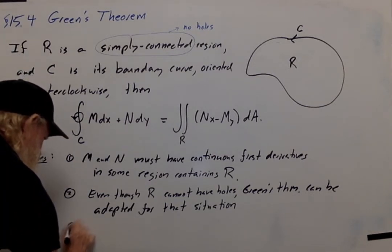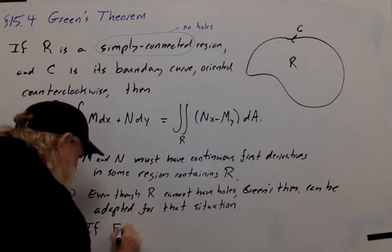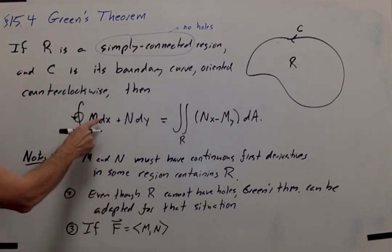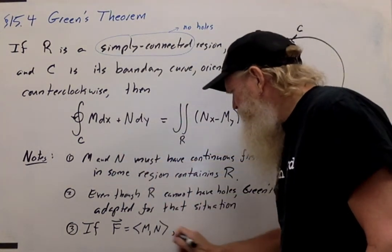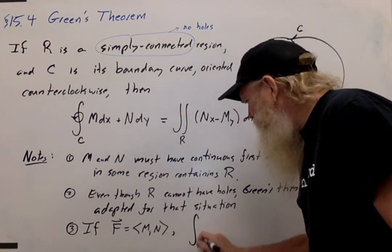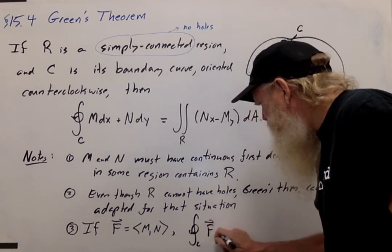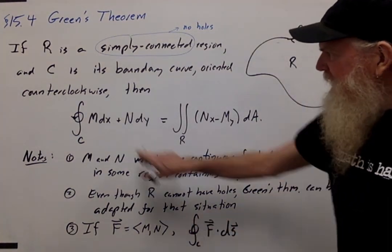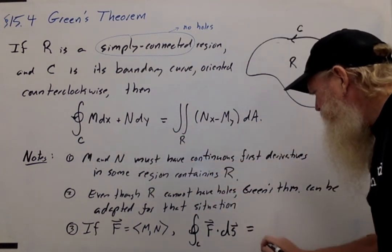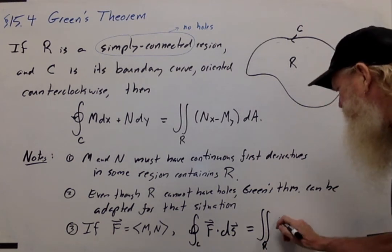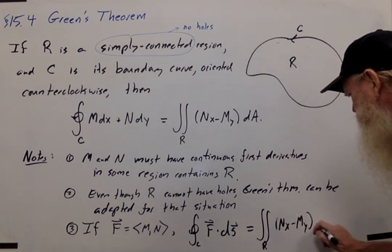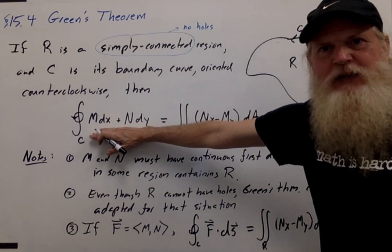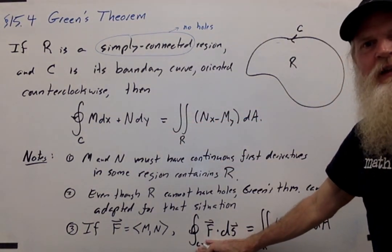And a fourth comment is, if we define the vector field F to be M comma N, then another way of writing the left-hand side of this equation is the integral around C of F dot little vector ds. So we've seen this symbol, and we know that this is completely equivalent to this. So this is another statement of Green's Theorem. So sometimes when we do examples of Green's Theorem, we'll use the Mdx plus Ndy notation. Other times we'll use the equivalent F dot ds notation.